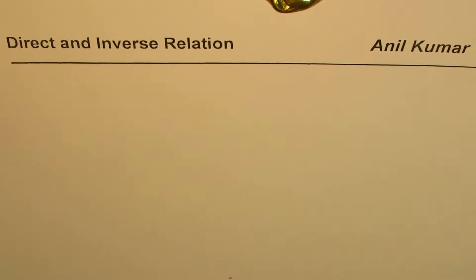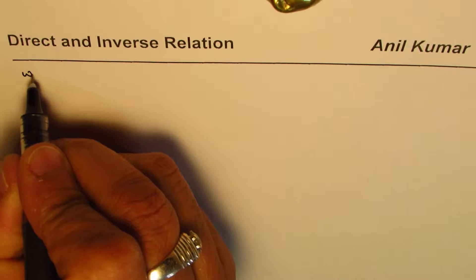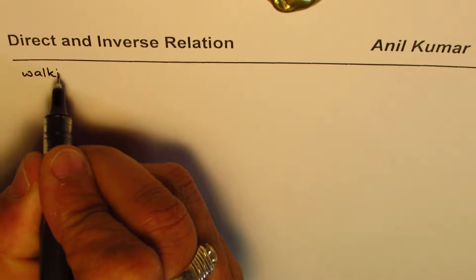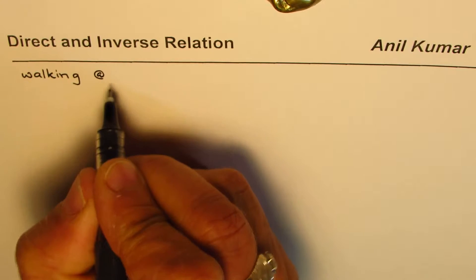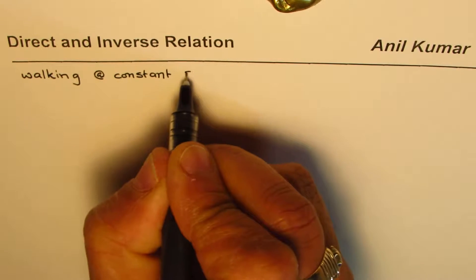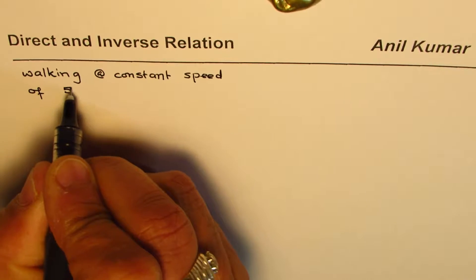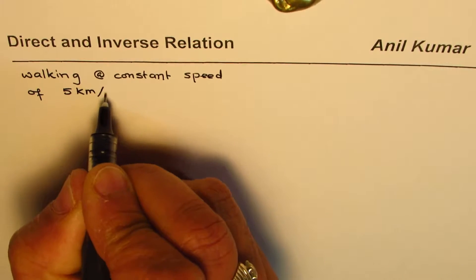I'm Anil Kumar and in this video we'll try to understand the terms direct relation and inverse relation. Let me take up a simple example of distance, time and speed. Let us say that I'm walking at a constant speed of 5 kilometers per hour.